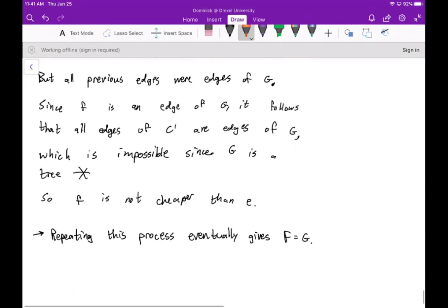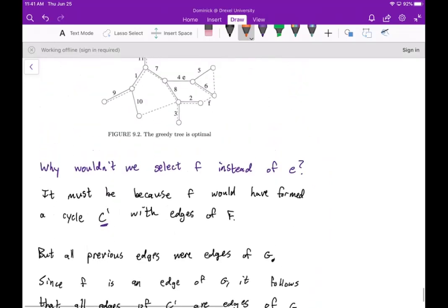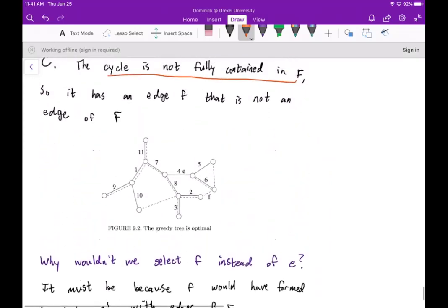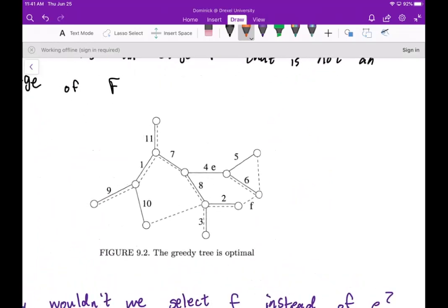So the idea here is that f is not cheaper, the edge f is not cheaper than the edge e. And if you were to continually do this process over and over again, you would eventually get that F is equal to G. So of course that would prove that Kruskal's algorithm is the cheapest way to go.